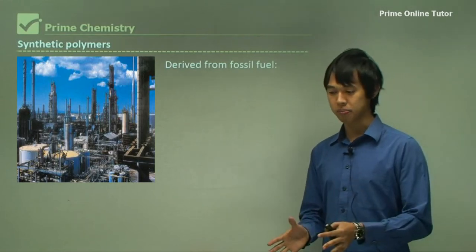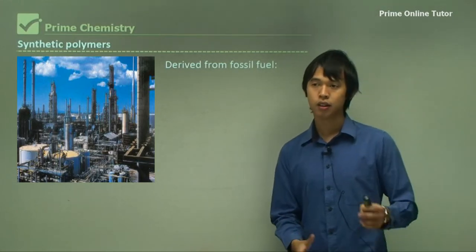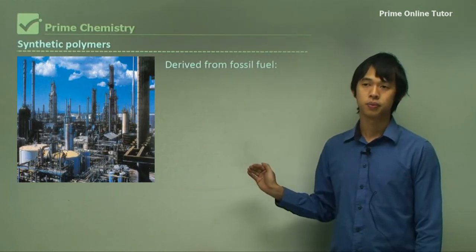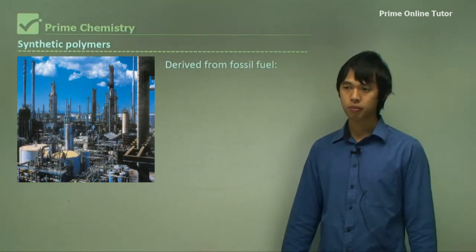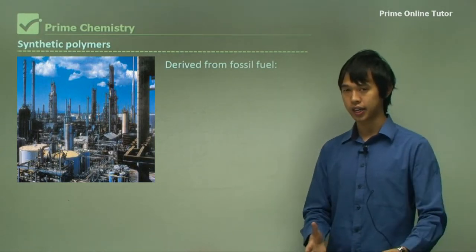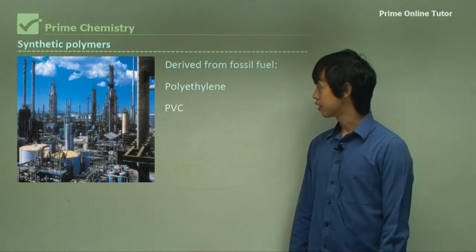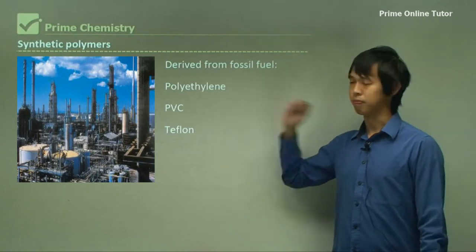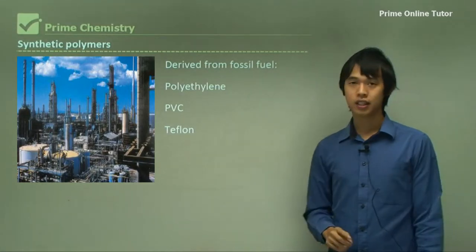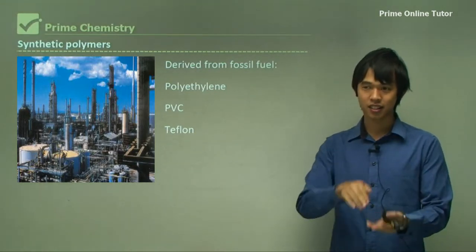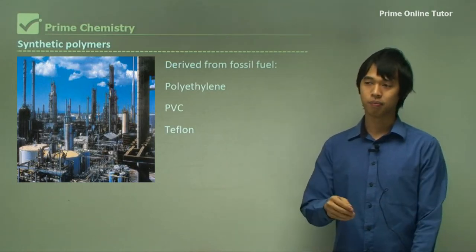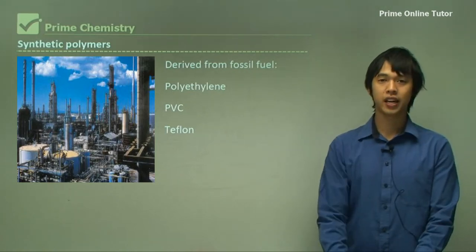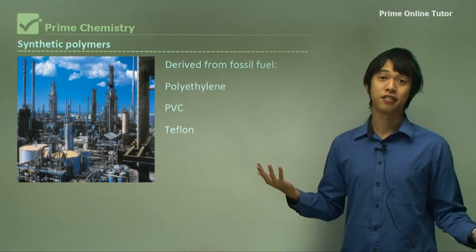Synthetic polymers come from fossil fuels. When we drill into the earth and get crude oil out, we can use that to make plastics. Some examples we see are polyethylene — the stuff in plastic bags; PVC, which we make pipes out of; and Teflon, the non-stick coating on pans. All of these come from fossil fuels refined from crude oil.